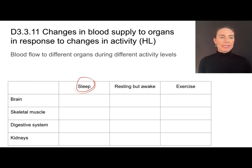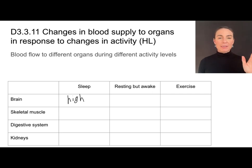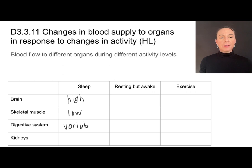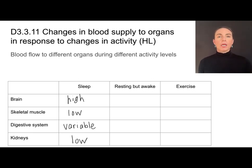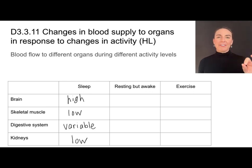When we sleep, there is a high volume of blood going to our brain — it does a lot of activity during sleep and needs high blood volume. Skeletal muscle has a very low volume of blood flow because we're not moving a lot. The digestive system can be variable depending on whether we ate before bed. Our kidneys receive a relatively low volume of blood while sleeping because the more blood pushed through our kidneys, the more urine produced — so to avoid producing a lot of urine and waking us up, blood volume there is kept relatively low.